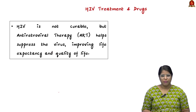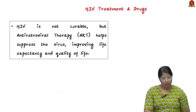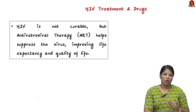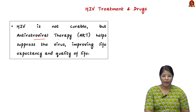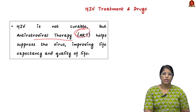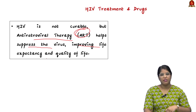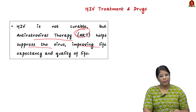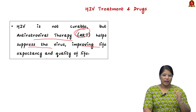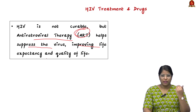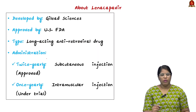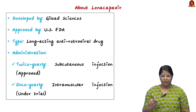So here comes the question: how is HIV treated and what is the drug? HIV is not curable. We have to give a lot of antiretroviral therapy (ART) to help the person suppress the virus and improve life expectancy and quality of life, but we cannot get rid of this virus. Even in India, for HIV patients, we have antiviral load reduction schemes.